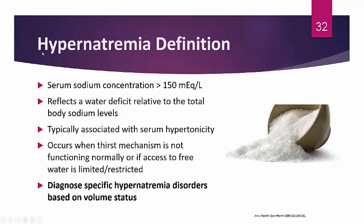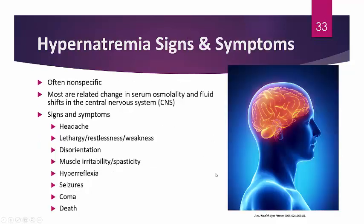Unlike hyponatremia, you diagnose the specific hypernatremia disorder based primarily on volume status — you don't need to assess tonicity, since most are hypertonic by nature. Once a patient has sodium greater than 150, just assess their volume status. You can confirm it's hypernatremia with tonicity, but volume status drives treatment decisions.